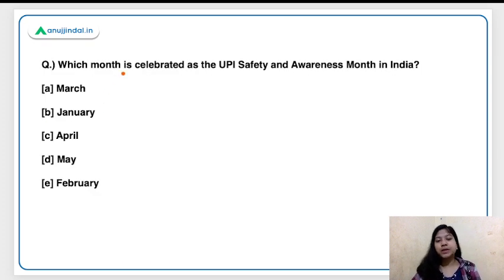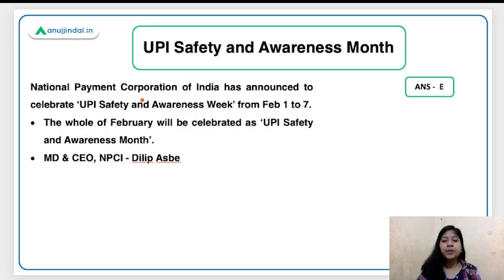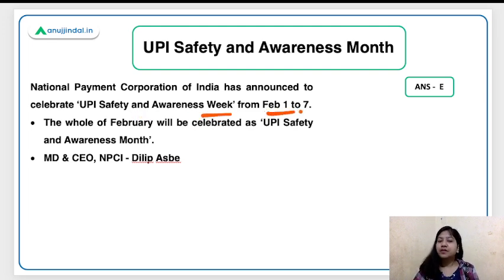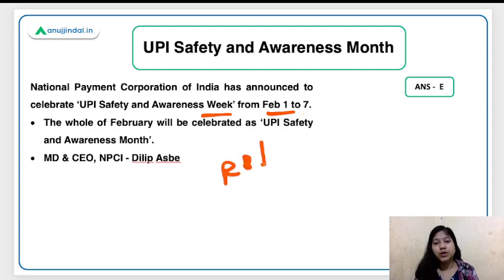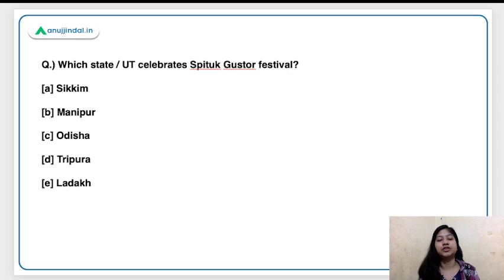Moving ahead: which month is celebrated as UPI Safety and Awareness Month in India? The right answer is February. NPCI — the National Payments Corporation of India — announced this. The UPI Safety and Awareness Week is celebrated from February 1st to 7th. Can you tell me in the comments which month RBI anchors the Financial Literacy Week?